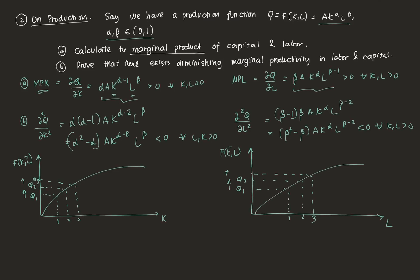Those are the economic applications of partial derivatives. We discussed an example on utility and production, highlighting the concepts of marginal utility and diminishing marginal utility, as well as marginal products and diminishing marginal products. Thank you for your attention.